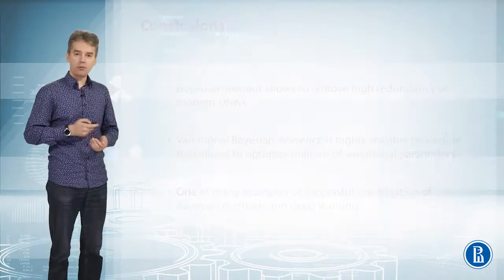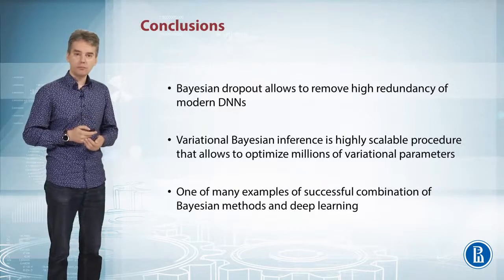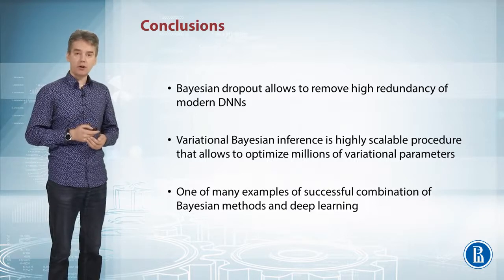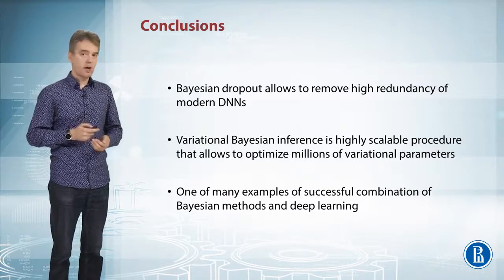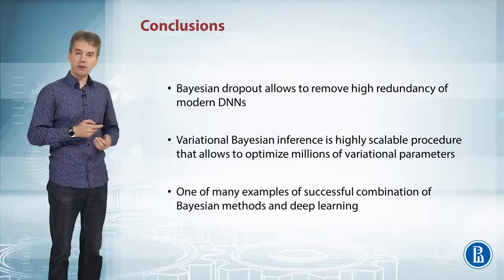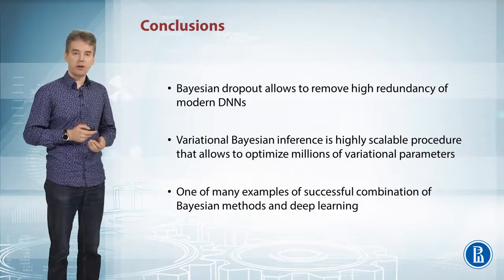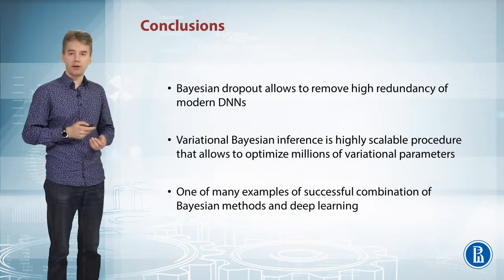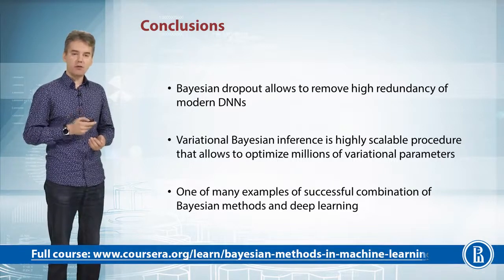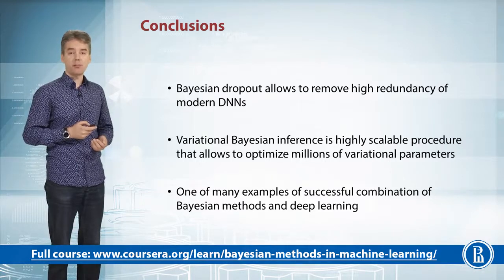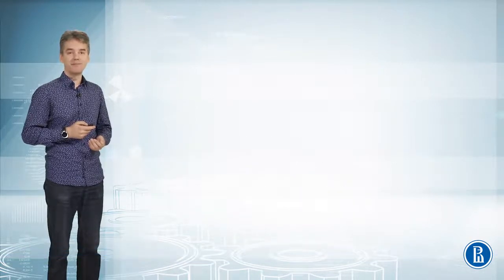This only became possible due to Bayesian dropout. To conclude: it is known that modern deep architectures are very redundant, but it is quite problematic to remove this redundancy. One of the most successful ways to do this is Bayesian dropout, or sparse variational dropout. Variational Bayesian inference is a highly scalable procedure that allows optimizing millions of variational parameters. This is just one of many examples of the successful combination of Bayesian methods and deep learning. More examples can be found in the additional reading material.